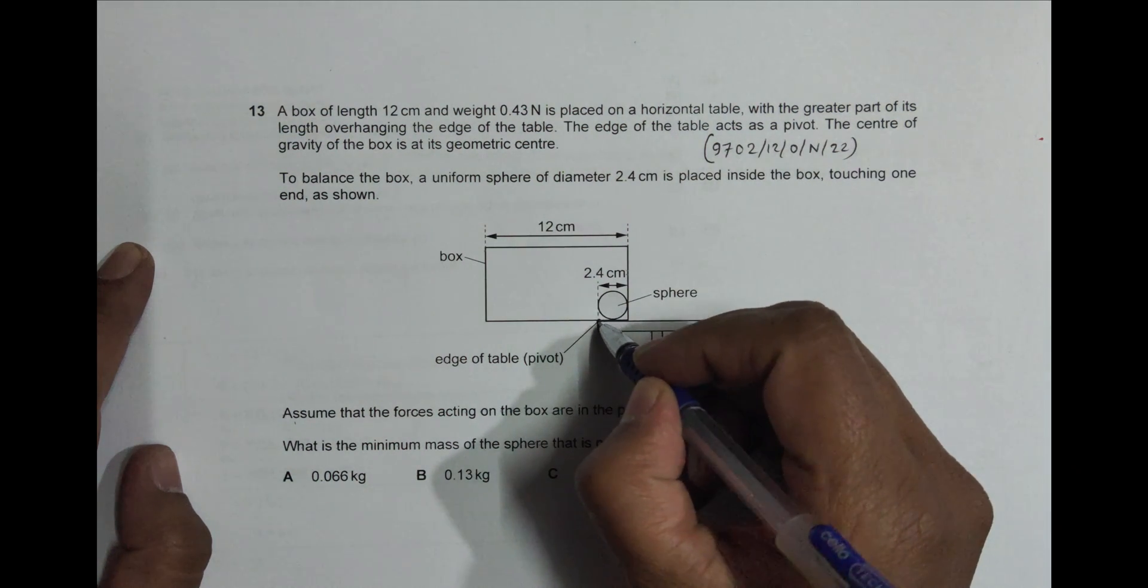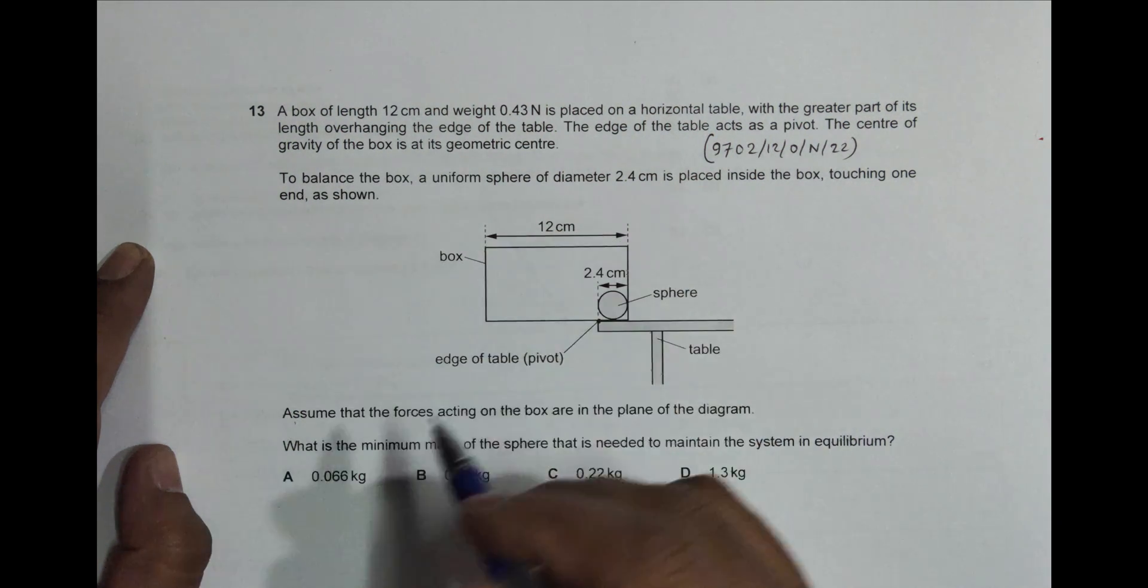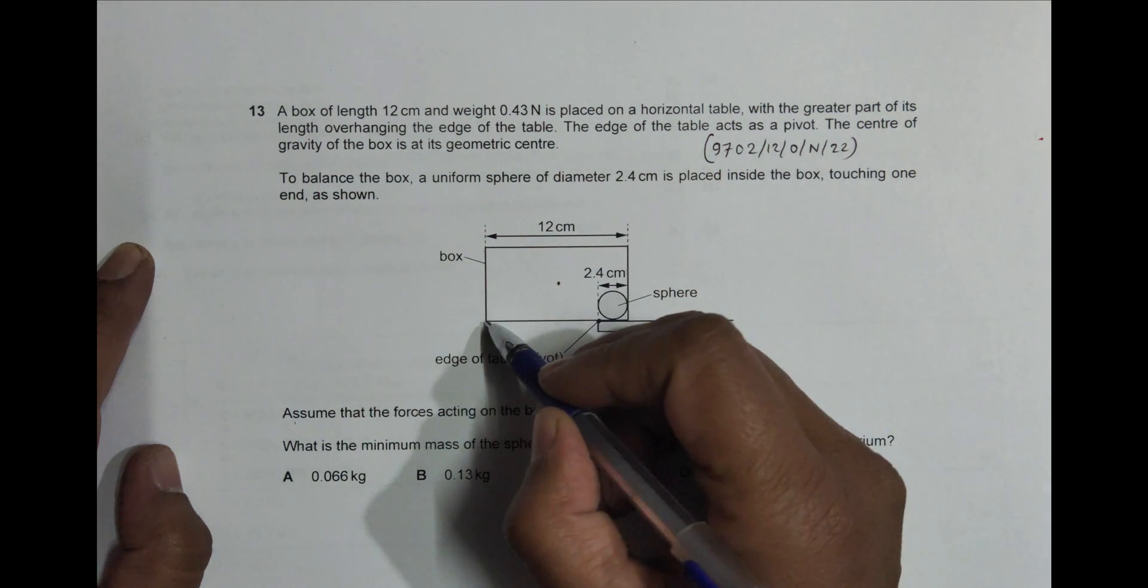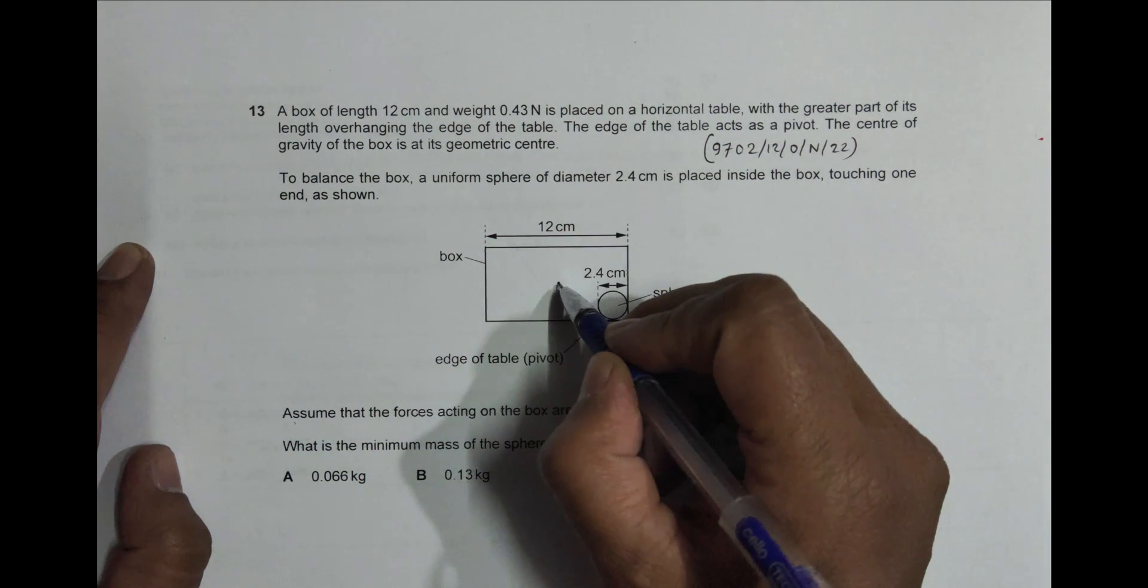The center of gravity of the box is at the geometric center. So the CG of this box is somewhere here, which is at the geometric center of this rectangle. If I draw a line like this and a line like this, the point where they cross will be the center of gravity of this thing.